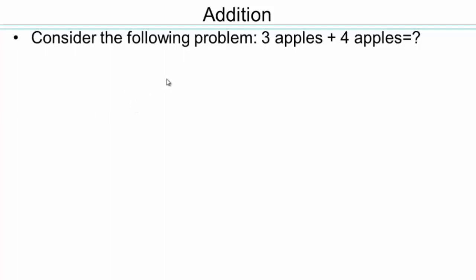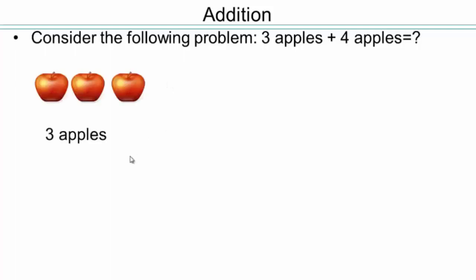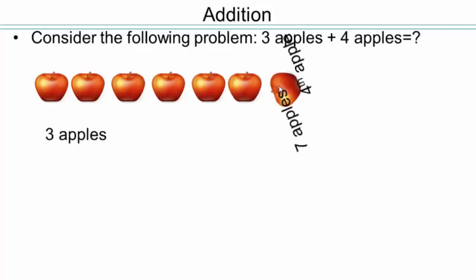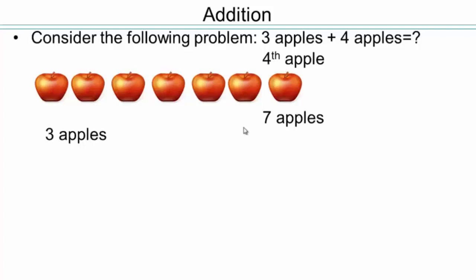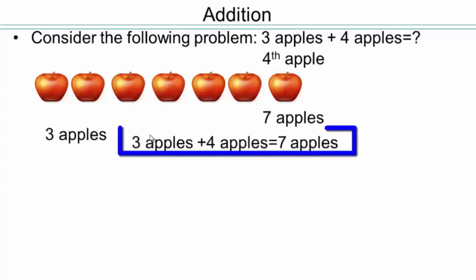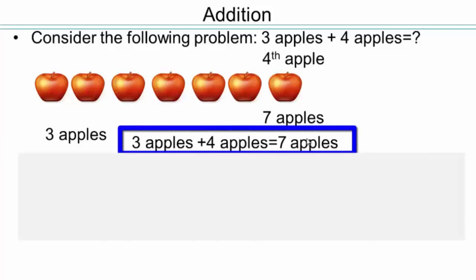Let's start with when you were in kindergarten: three apples plus four apples equals what? The way we do counting number addition is you take the three apples and count four up from three: four apples, five apples, six apples, seven apples — that's my fourth apple added. So when you add four apples to three apples you end up with seven apples. You just counted four up from three.